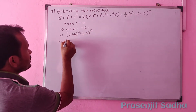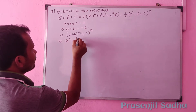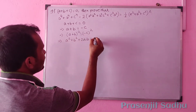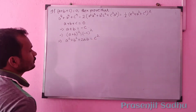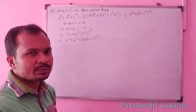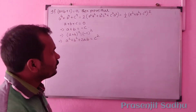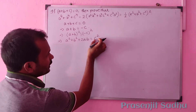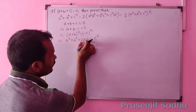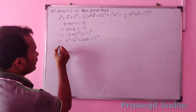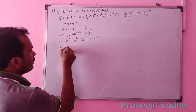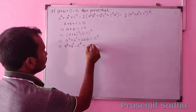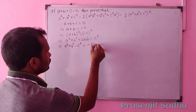Expanding, we get a² plus b² plus 2ab is equal to c². Rearranging, a² plus b² minus c² is equal to minus 2ab.